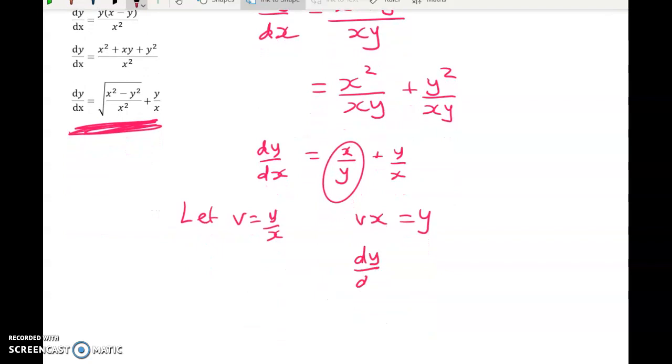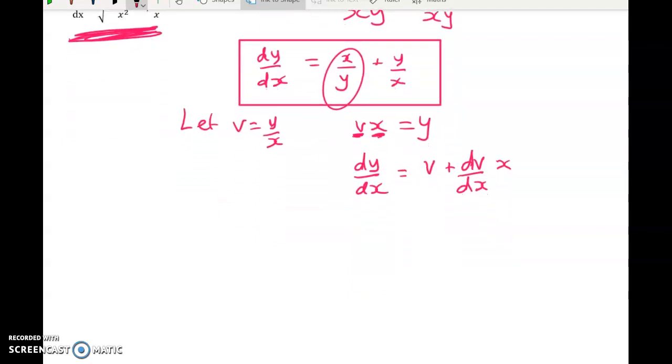So dy by dx by the product rule is going to equal V, the derivative of the first function times the derivative of the second, which is one, plus the other way around, dV by dx times x. So I'm going to take this equation and write everything in terms of V. So there'll be no more y until we get to the end. So V plus dV by dx times x is equal to V to the negative one plus V. And very happily, those V's cancel each other out. And that leaves me with a separable equation.